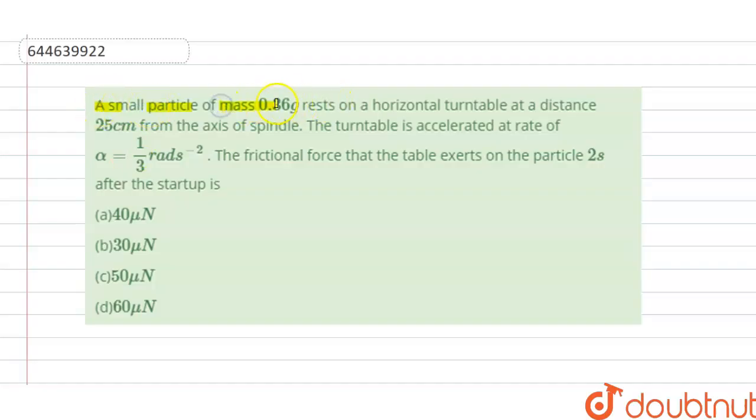A small particle of mass 0.36 gram rests on a horizontal turntable at a distance 25 centimeter from the axis of spindle. The turntable is accelerated at the rate of alpha 1 by 3 radian per second square, and the frictional force that the table exerts on the particle 2 seconds after the startup is